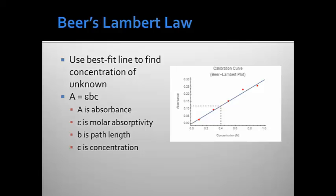Say, for example, an unknown gave an absorbance of 0.12. We could find that on the y-axis and find where the best fit line crosses that point, and we would see in this particular hypothetical case that it corresponds to a concentration of about 0.4 molar.